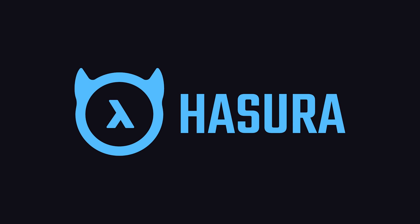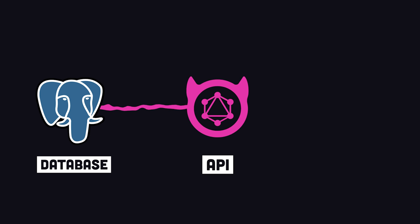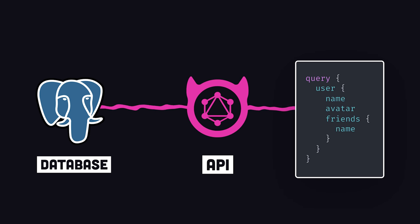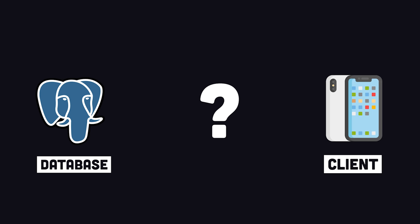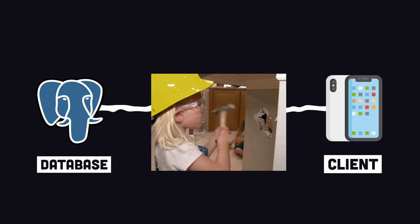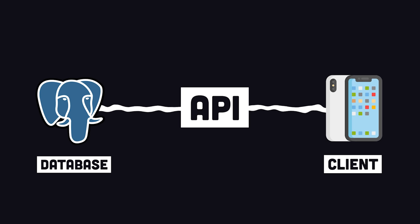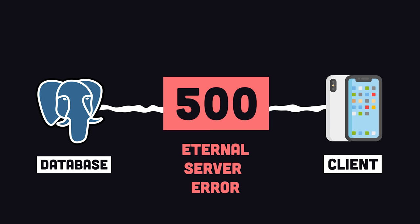Hasura instantly turns your relational database into a GraphQL or REST API. When building a full-stack application, the end-user likely needs to communicate with the database. That means you need to build a secure API in the middle so the client can tell the server what it needs from the database. But building the perfect API is easier said than done.